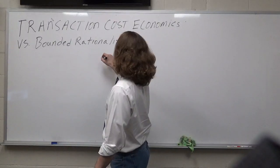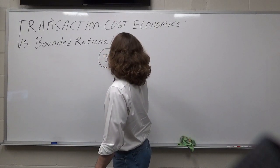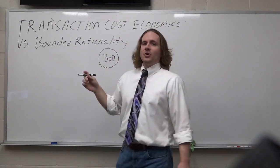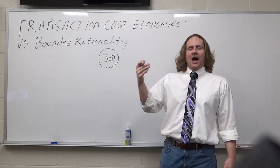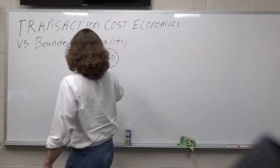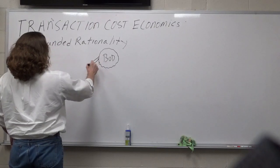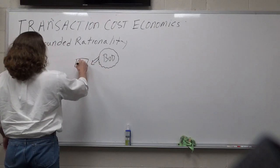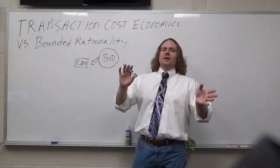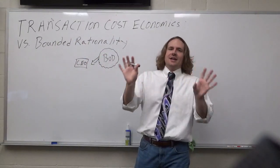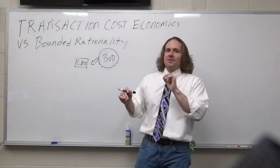At the top you normally have a board of directors, designed to represent the interests of the owners, i.e. stockholders. Working for the board of directors is the CEO. Sometimes the CEO is also the chairman of the board — if you'd like to know more about that, check out my playlist on corporate governance.